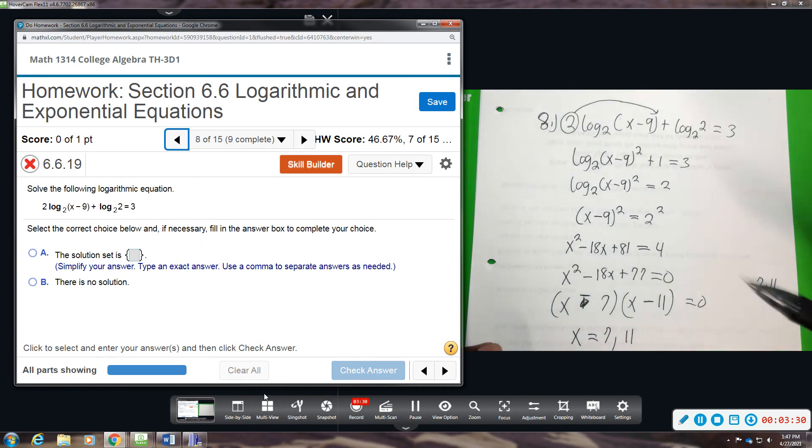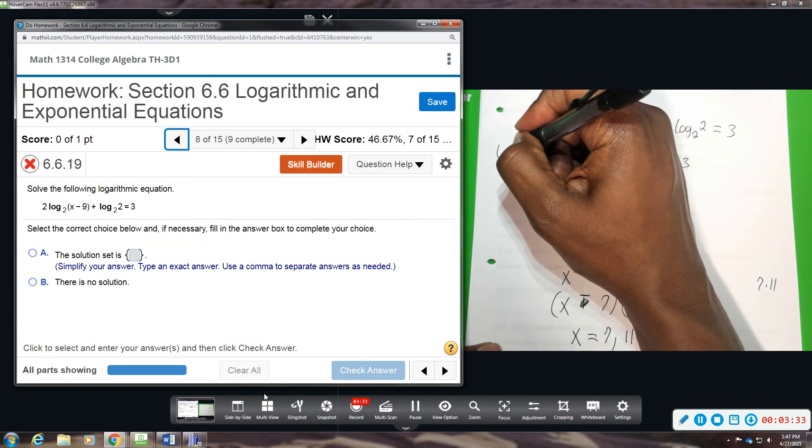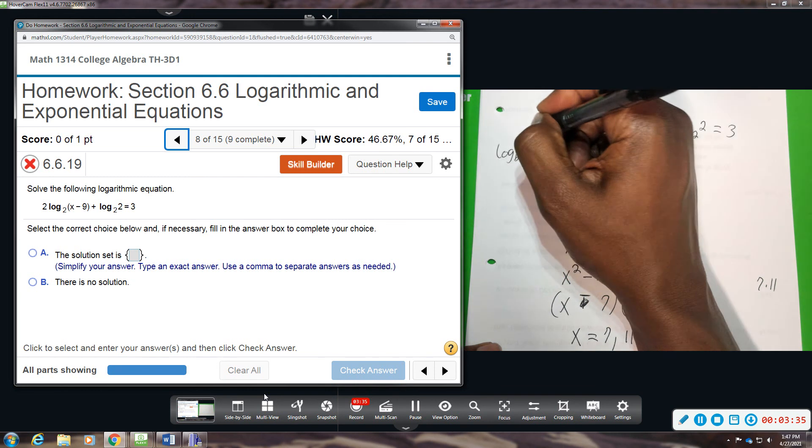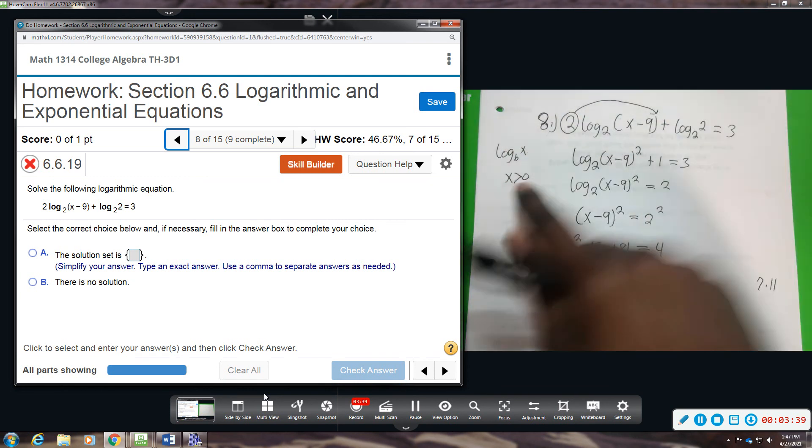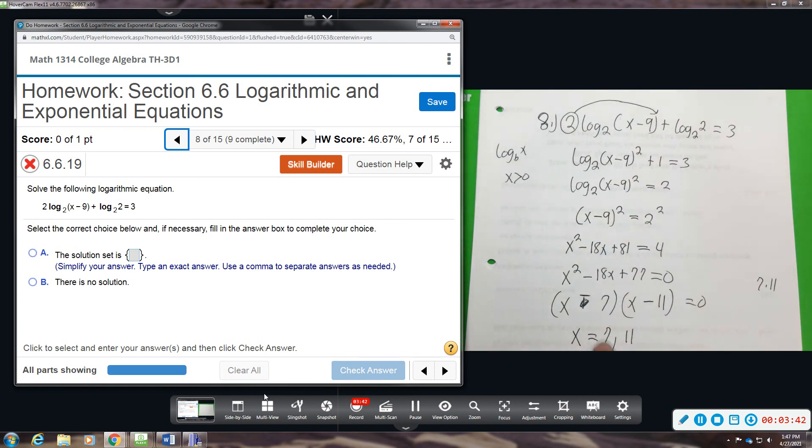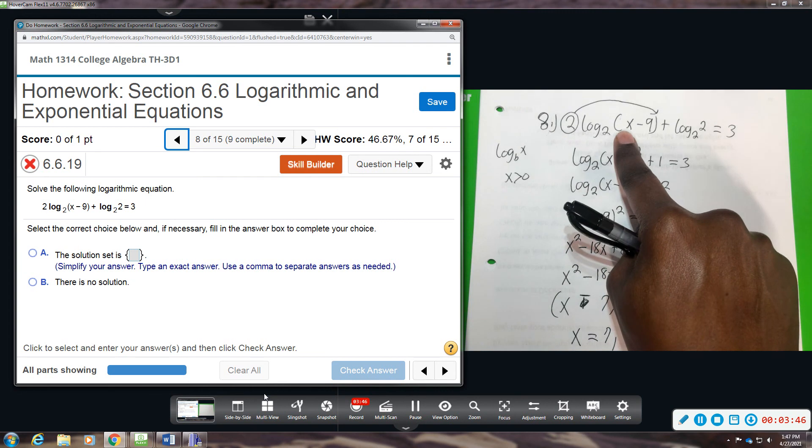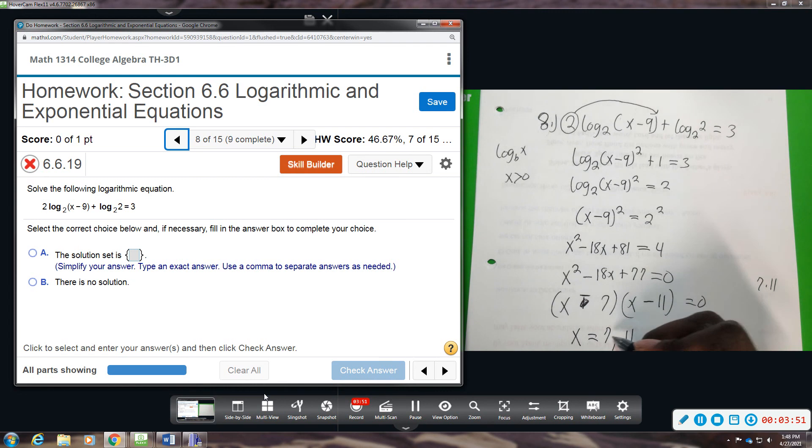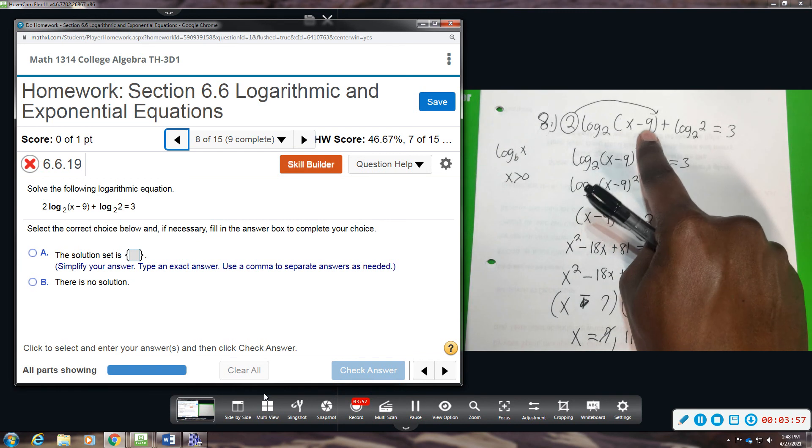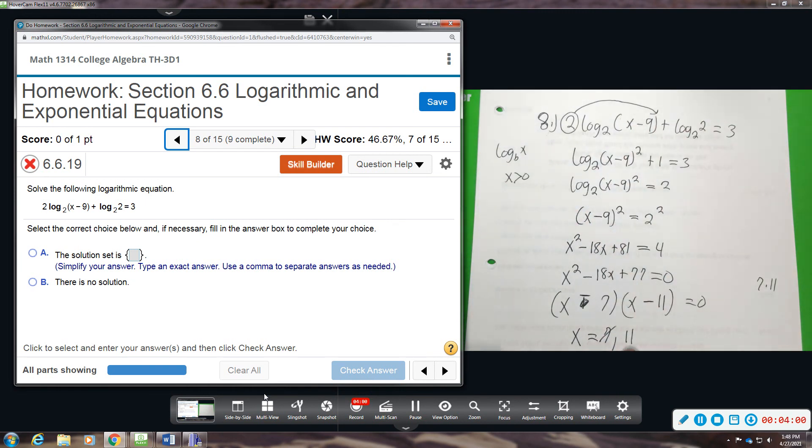Remember, with logs, we have this criteria that if you're taking the log of something, whatever you're taking the log of, it has to be greater than 0. It has to be positive. So if you were to plug in this number 7, 7 minus 9 will give us a negative 2. And that will not work. Now plug in 11. 11 minus 9 gives us a positive 2, so that one will work. So 11 will be our only solution.